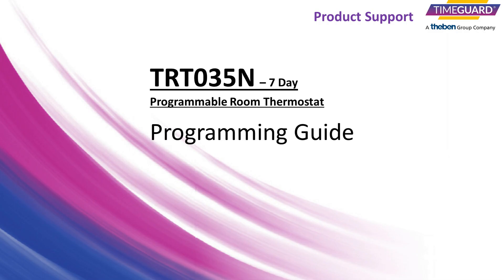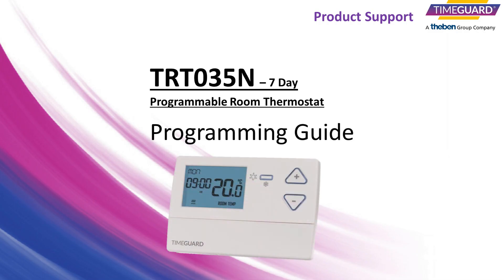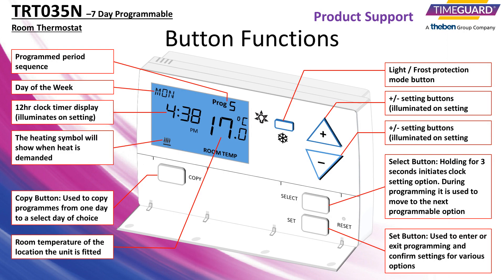Welcome to the TRT-035N Programming Guide brought to you by TimeGuard Customer Services. The TRT-035N is a 7-day programmable room thermostat. It regulates temperature based on the period of the day the target temperature is set to. There are no on or off time-based settings. Features include optimum start and temperature swing abilities for more accurate responses during programmed periods. It also features a copy mode option to copy programs from one day to another if required.